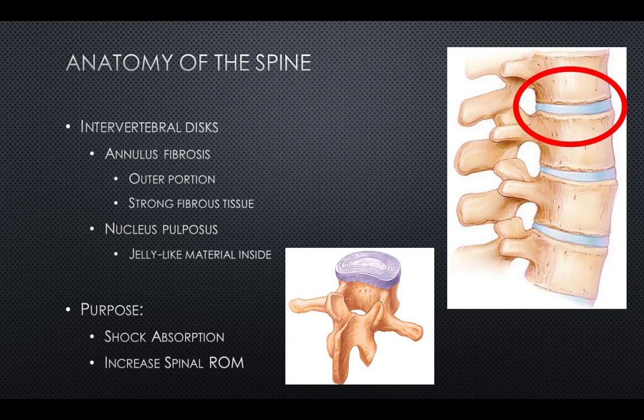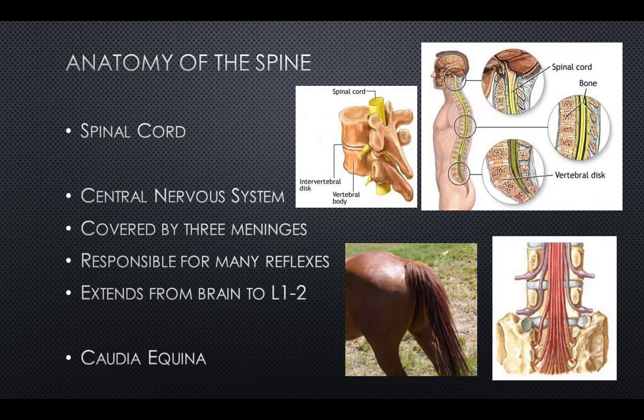Six discs are in the neck, 12 are in the middle, and 5 are in the lower back. There is one disc between each pair of vertebrae, except for the first segment at the atlas. The atlas has a ring around it that is roughly cone-shaped as an extension of the axis. The axis acts as a post around which the atlas can rotate, allowing the neck to swivel.